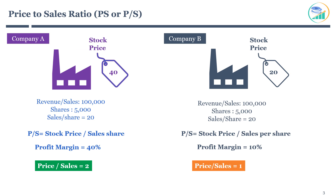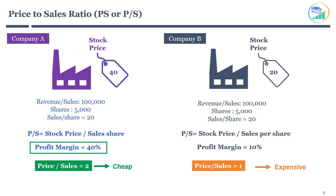Clearly, Company A is trading at a higher price-to-sales multiple compared to Company B. Before you conclude that Company B is trading at a lower valuation, you should look at how much of sales the company is converting into profit. In this case, Company A is more valuable since it has a much higher profit margin. The valuation may be justified because every rupee of sales Company A generates higher profit. Hence, you can conclude that Company A is comparatively cheaper even if it's trading at higher price-to-sales multiples.